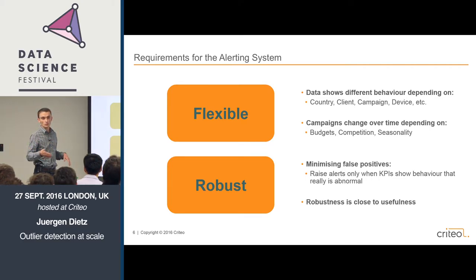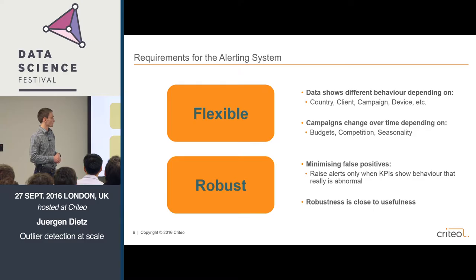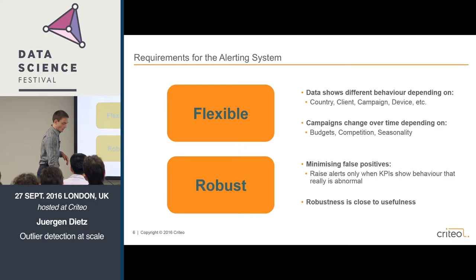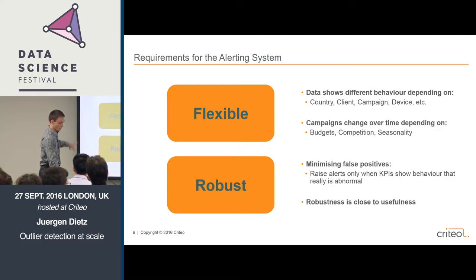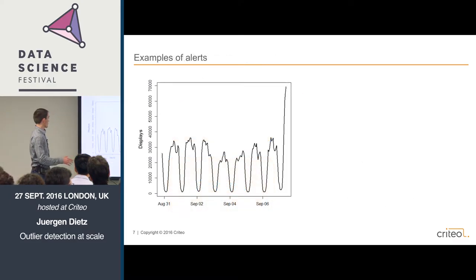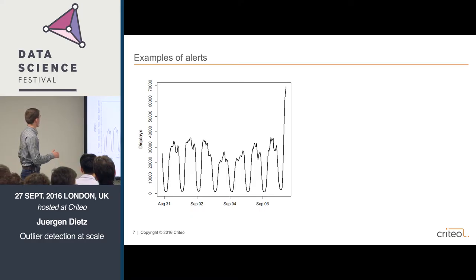Finally, it has to be robust. We want to minimize false positives because the usefulness of the system is very much tied to that. If we have 20,000 campaigns with 10 metrics each and we raise 10% or even more false positives, it's very clearly going to be unusable.